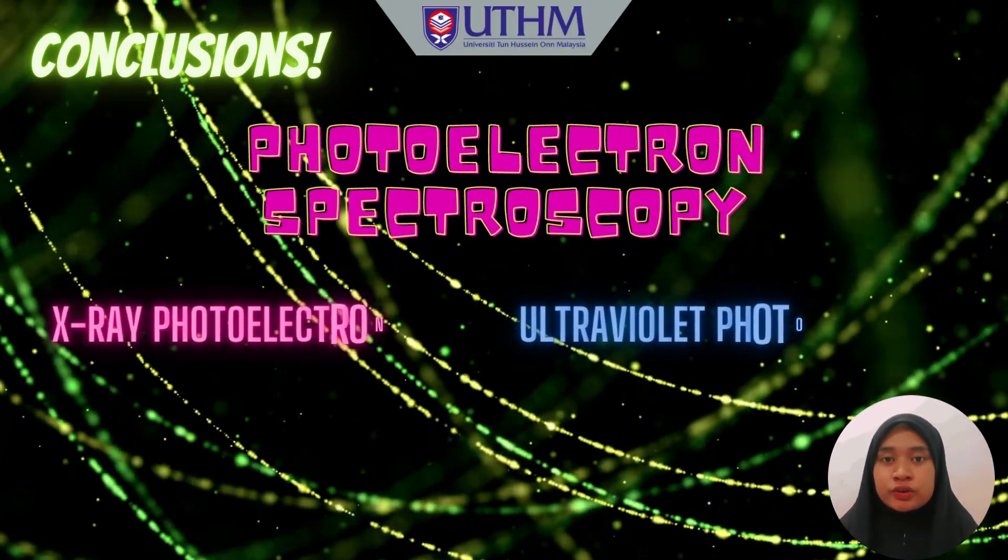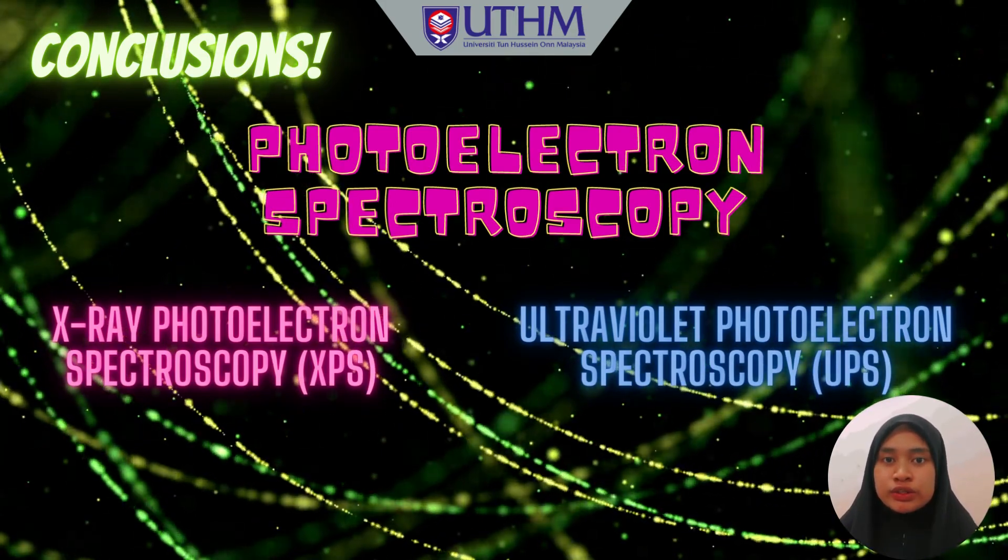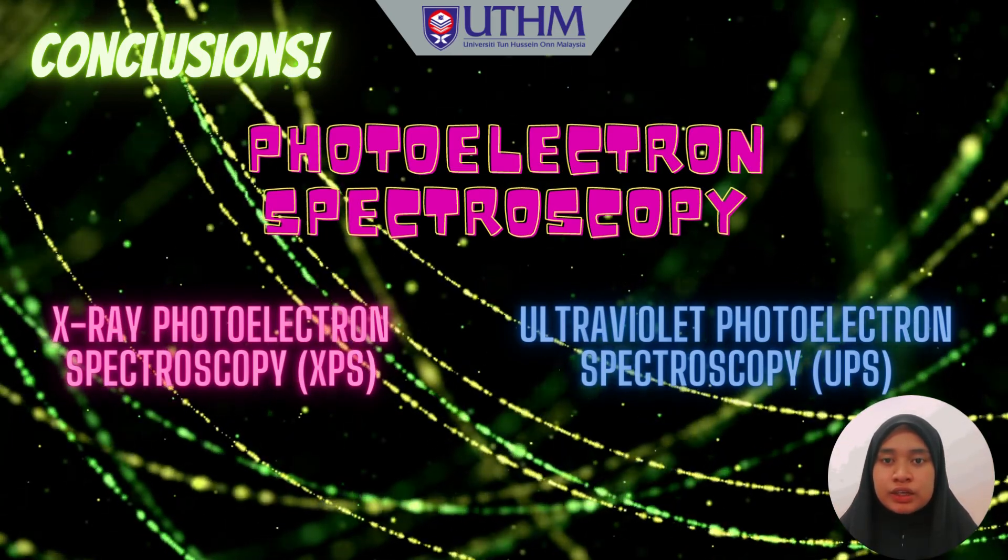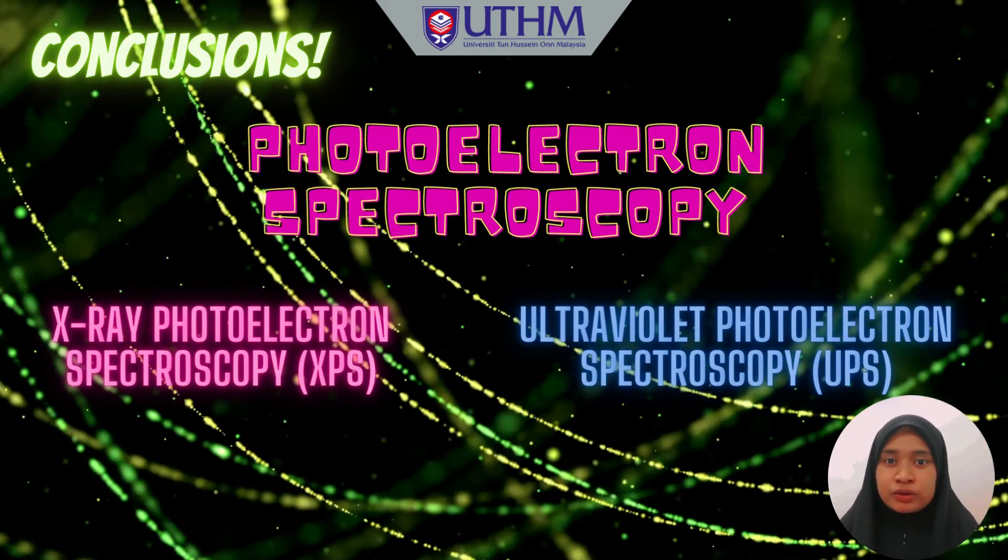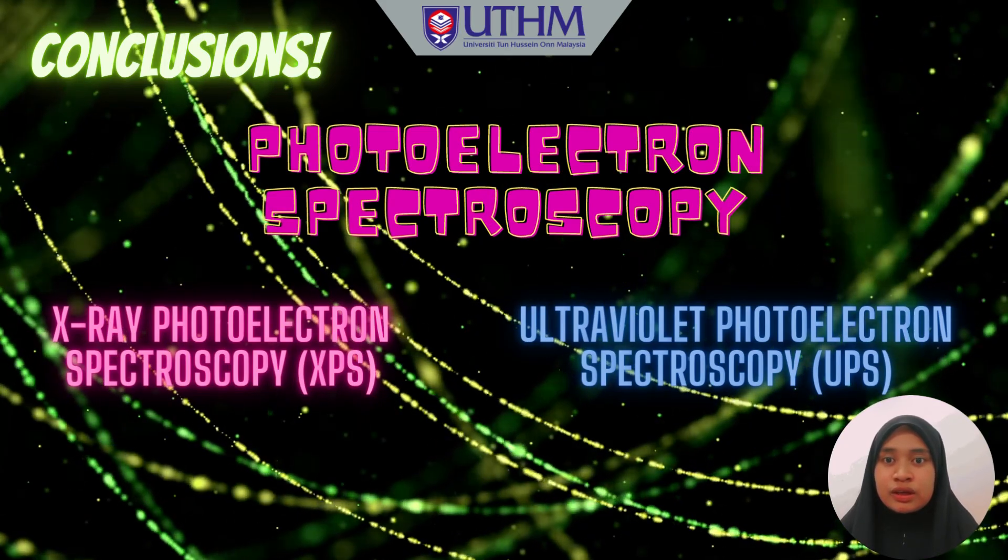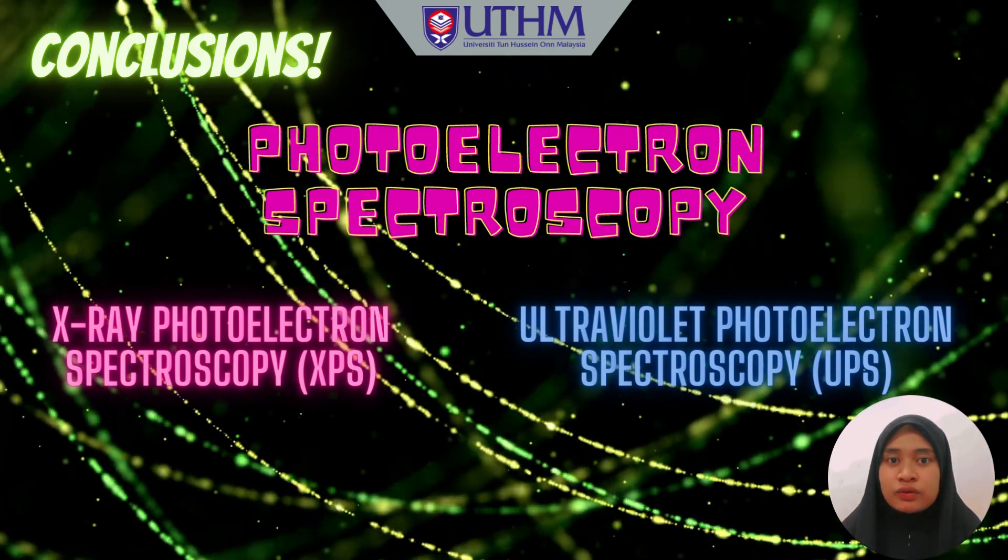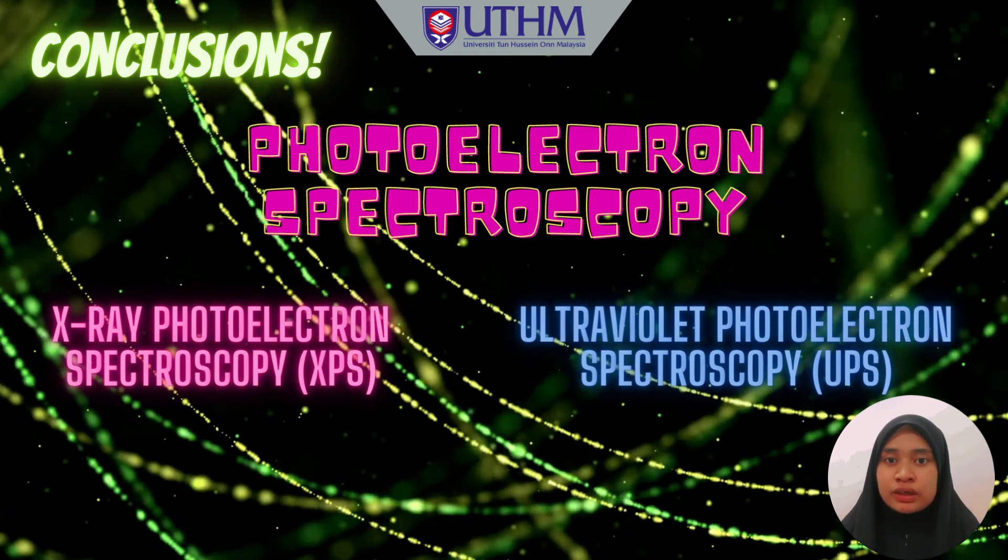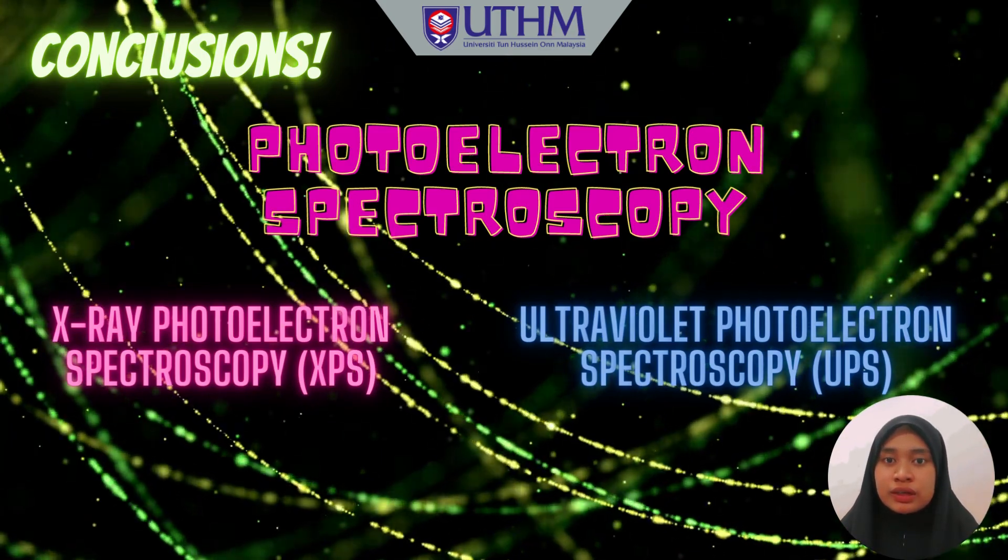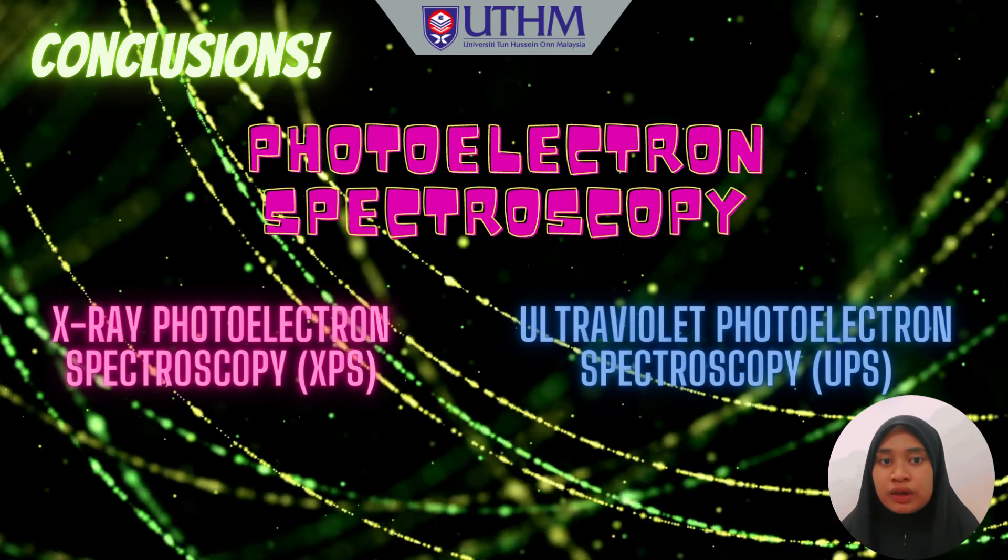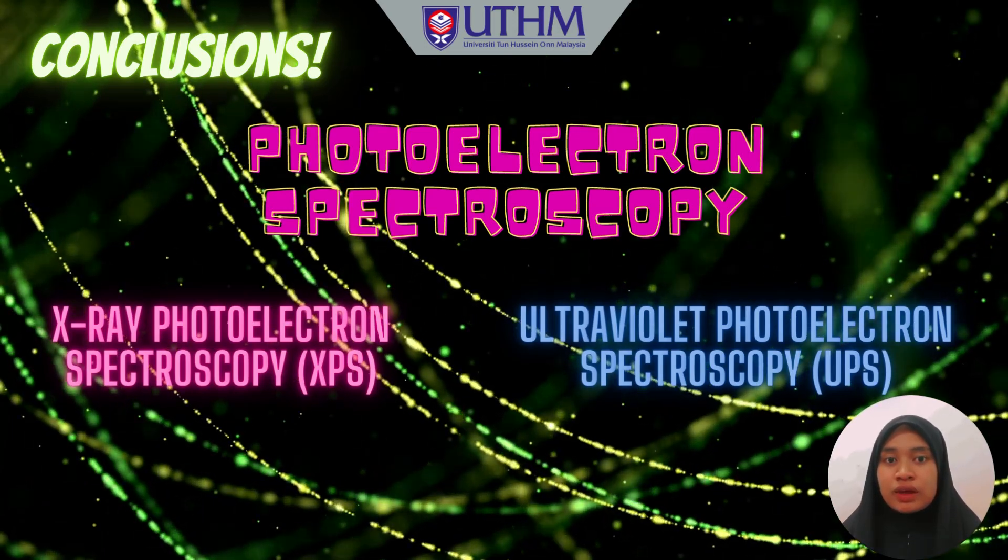To conclude, photoelectron spectroscopy, PES, utilizes photoionization and analysis of the kinetic energy distribution of the emitted photoelectrons to study the composition and electronic state of the surface region of a sample. And there are two types of photoelectron spectroscopy discussed in this video. First is X-ray photoelectron spectroscopy, XPS, that is used as a surface probe with a photon energy of 200 to 2000 eV to examine electrons in core levels. And ultraviolet photoelectron spectroscopy, UPS, that uses vacuum UV radiation with a photon energy of 10 to 45 eV to examine electrons in valence shells.